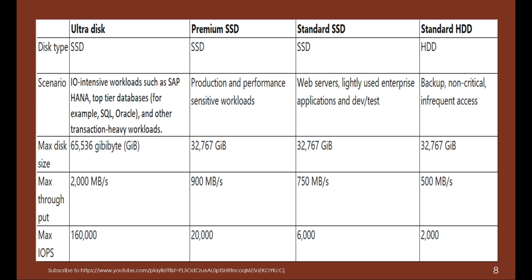This is a high-level overview of storage. From a disk size perspective, the highest availability is with Ultra Disk, and the others offer up to 32 terabytes with Premium, Standard SSD, and Standard HDD. Maximum throughput is 2000 MBps for Ultra Disk and reduces for the lower tiers. Maximum IOPS is also best for Ultra Disk and reduces down to Standard HDD. It all depends on the performance requirements of your environment — that determines how you design your compute, memory, and storage.